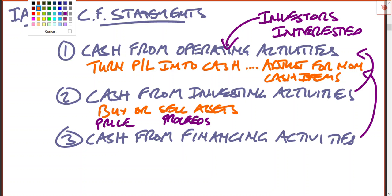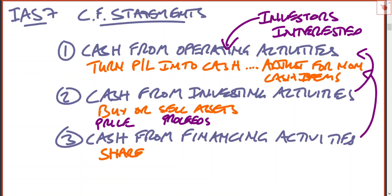When it comes to cash from financing activities, that's just things like shares issued or loans issued or paid back — again very easy to find. Often they'll be given to you, or maybe they'll give you a statement of changes in equity and you can pick up the figures from there.